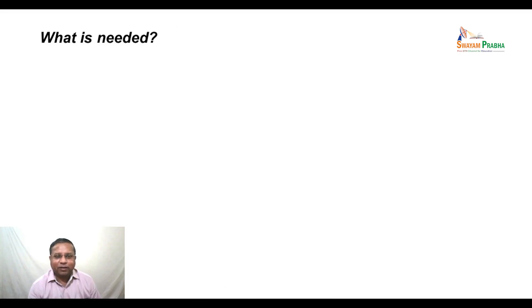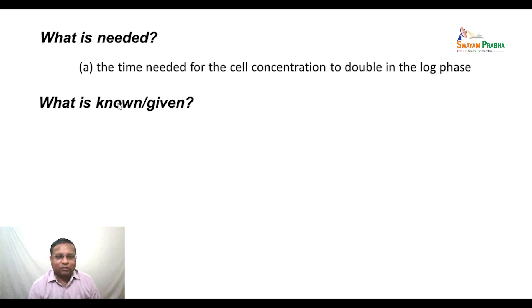For part B, what is needed? The time for the cell concentration to double in the log phase. What is known or given? Written in terms of our terminology, x = 2x₀. The specific growth rate is 0.5 hour inverse.